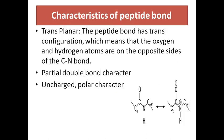What are the characteristics of a peptide bond? The peptide bond is always transplanar. Transplanar means the peptide bonds have trans configuration, which means that the oxygen and hydrogen atoms will be on opposite sides of the C-N bond. The peptide bond has a planar structure as a consequence of resonance interactions that give the peptide bond a double bond character. Here you can find a double bond, a partially negative charge and a partial positive charge — so a peptide bond has a double bond character.